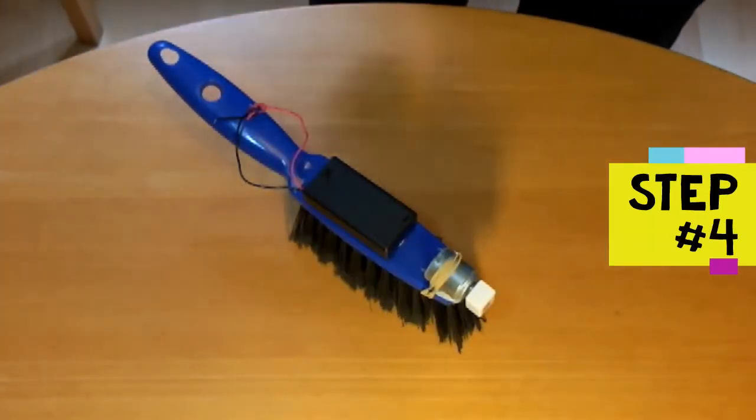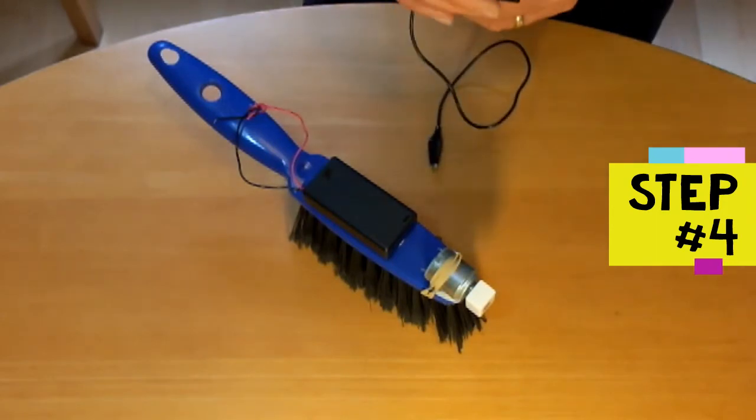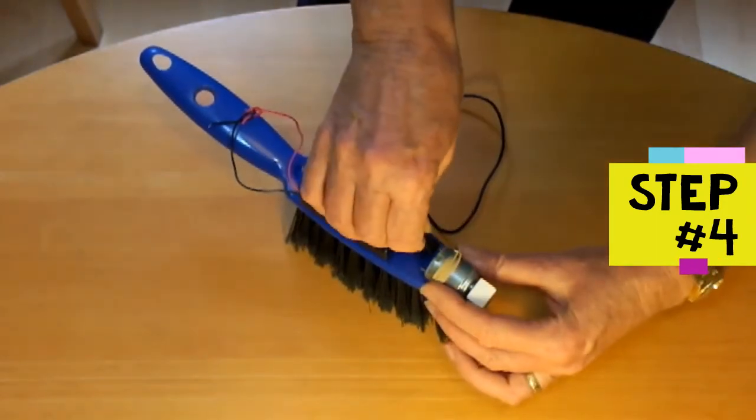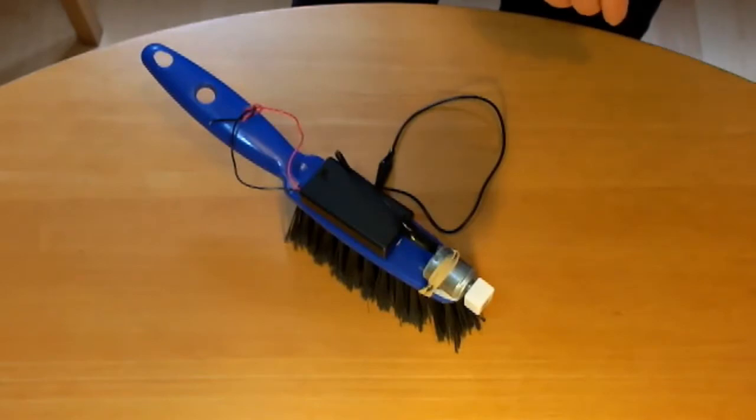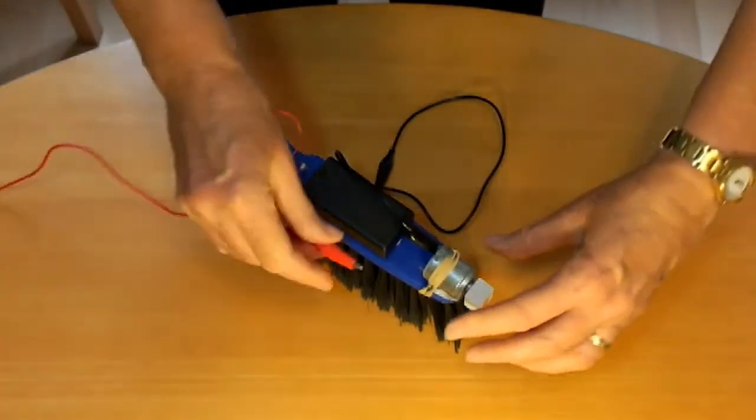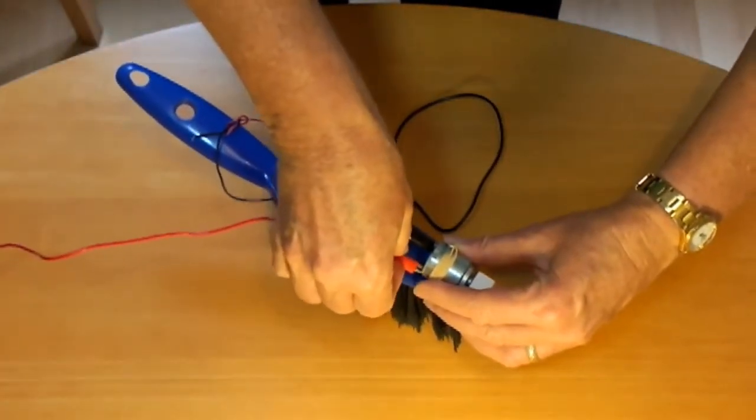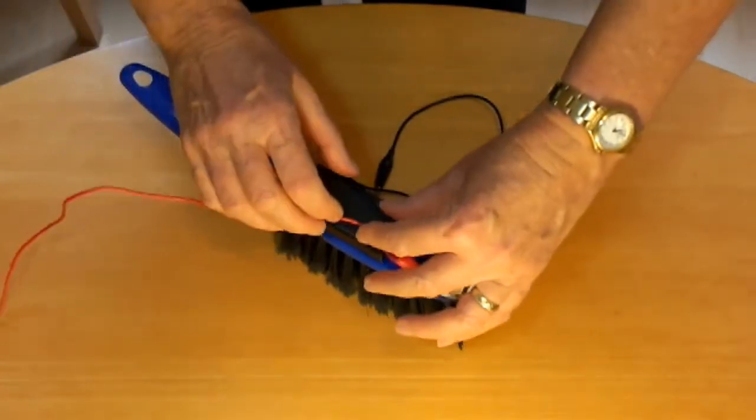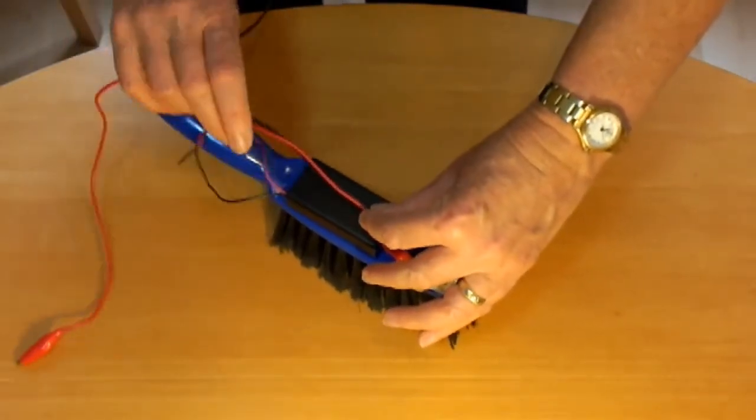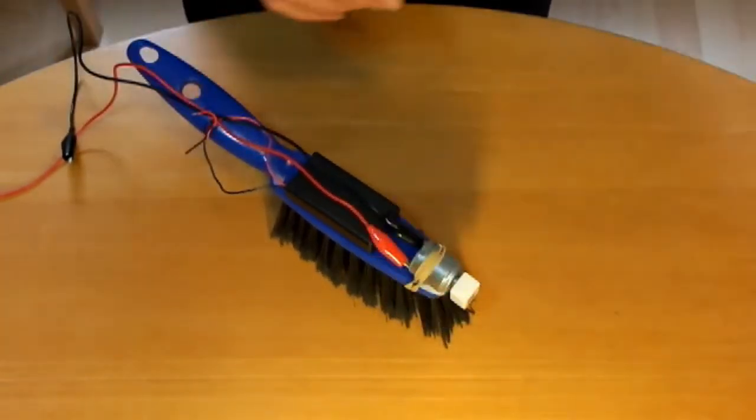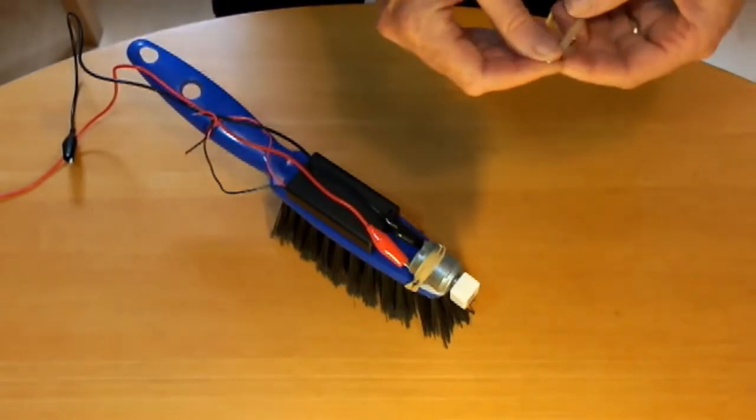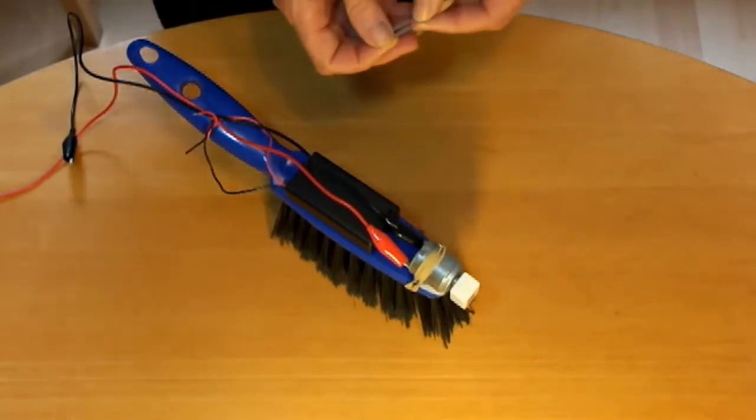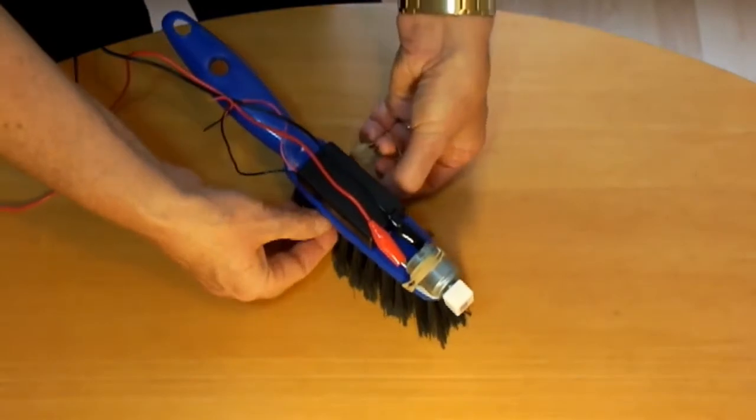Step four is to attach the crocodile leads. Click one crocodile lead onto one motor terminal and the other crocodile lead onto the second motor terminal. Lay the crocodile leads across the top of the battery box. Use the second rubber band to attach the crocodile leads and the battery box in position.